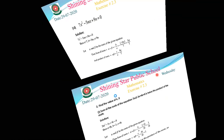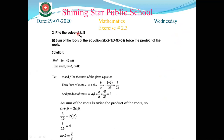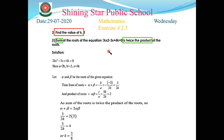Now let's start question number two: find the value of k. Part number one: the sum of the roots of the equation is twice the product of the roots. From the statement, we get two things: we need to find the value of k, and the condition is that the sum is twice the product.